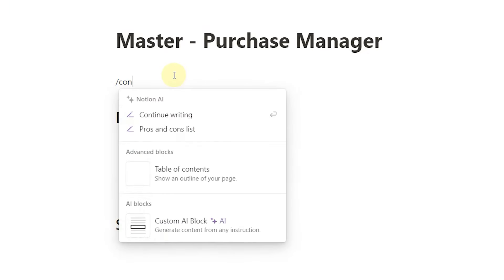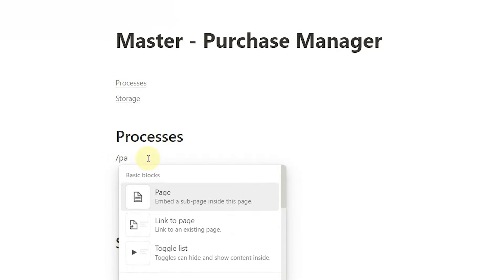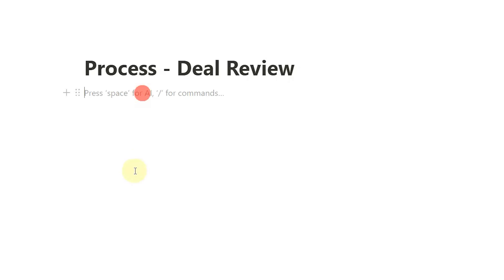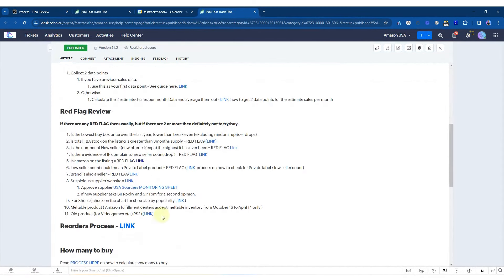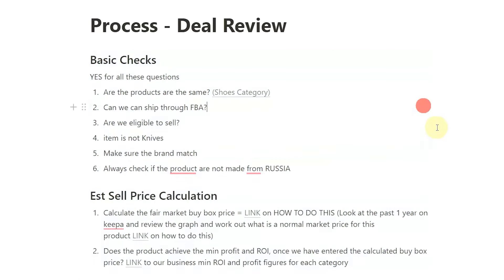In my processes, I probably want to have a page which might be deal analysis. So process, start that off, and then call it 'deal review.' This is my process for deal review. Then I'm going to come to my deal review process and grab the basic checks. I'll write them out and drop them in. So this is going to be my basic checks for my deal review process. When I do my analysis, I might have two screens — one with my deal on it and the other with my process document, so I can check I've done the estimated sale price, fair market calculation, and so on.